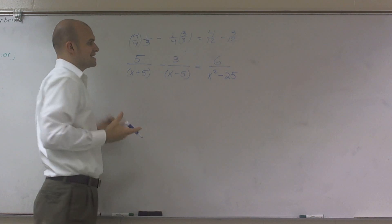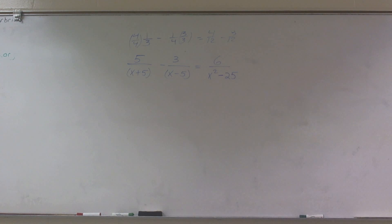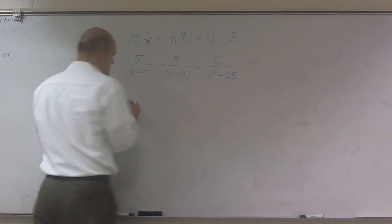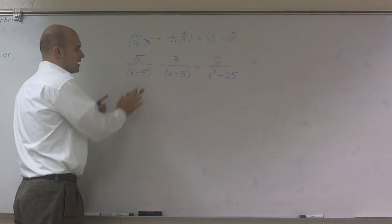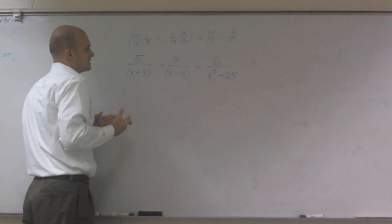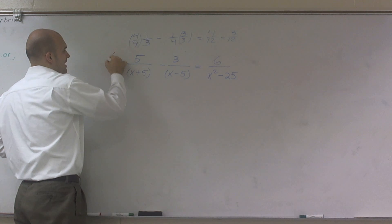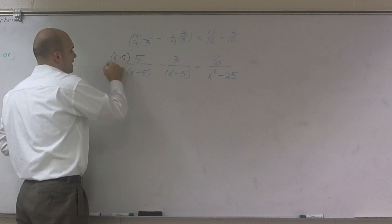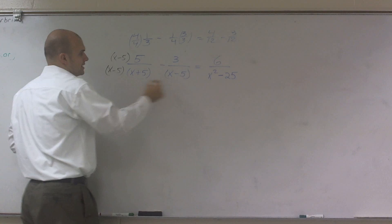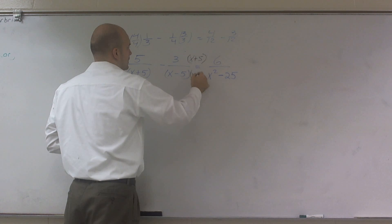Well, here it's the exact same thing. What we're going to do is we're going to have to multiply by our least common multiples. So our least common multiple for these problems are going to be x plus 5, x minus 5. So I'm going to multiply this by x minus 5 on the top and the bottom. Here, I'm going to multiply this by x plus 5 on the top and the bottom.